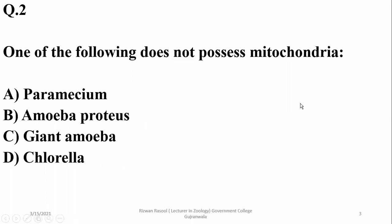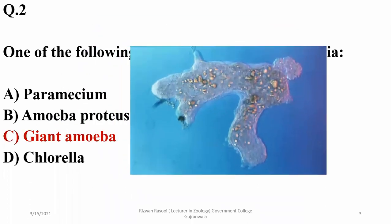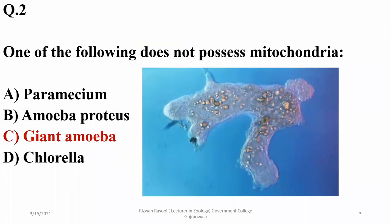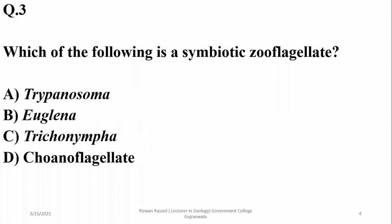Which of the following does not possess mitochondria? It is Pelomyxa, a giant amoeba that possesses multiple nuclei but none of the other membrane-bounded organelles.